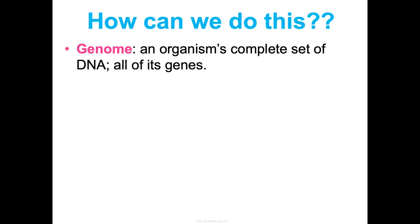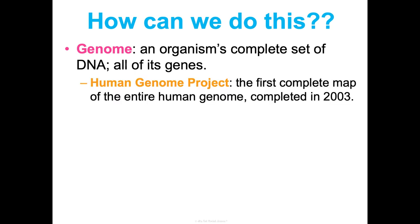It starts with understanding the human genome. A genome is just an organism's complete set of DNA — all of its genes. The Human Genome Project was the first complete map of a human's entire genome, completed in 2003. We learned that human DNA has 3 billion base pairs and approximately 21,000 genes that code for proteins. Even more fascinating, only about 1.5% of your DNA is actually coding for proteins. Much of your DNA is repetitive sequences and some regulatory sequences. We also found that we share about 99% of our genome with other humans.